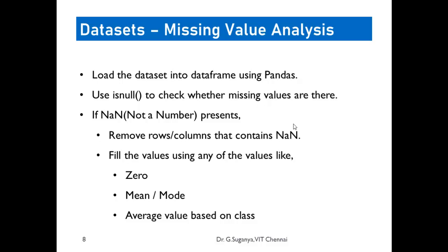To overcome data loss, we fill up the missing values. Options include filling with zero, filling with the mean of that attribute (which is the average and won't skew results significantly), or using the mode (the most frequently repeating value). A more refined approach is to divide data by output class and use the class-specific mean. The key rule is that missing values must not be left as-is — they should be removed or properly filled.